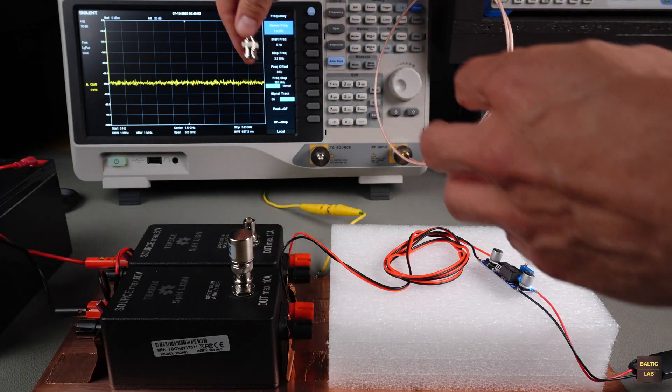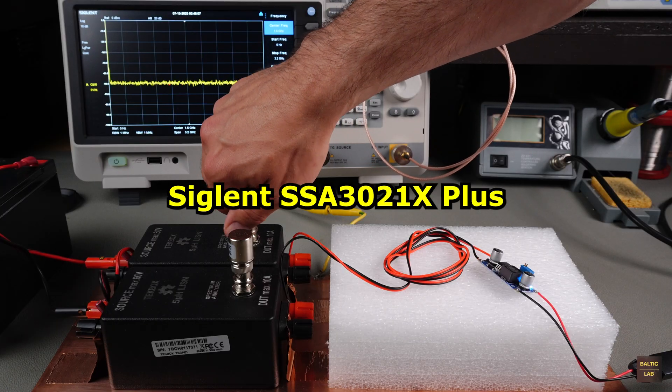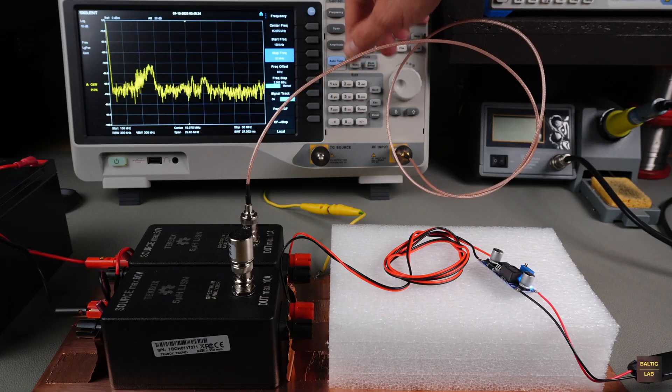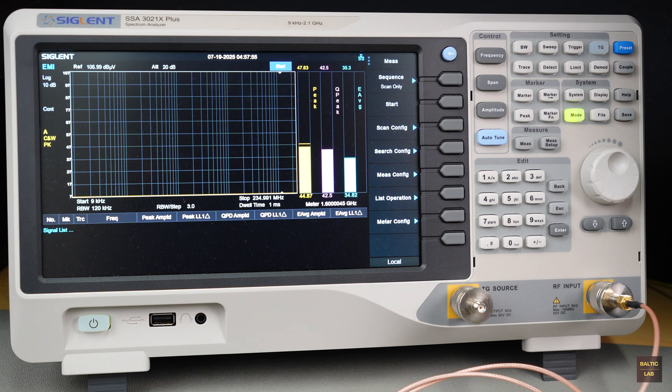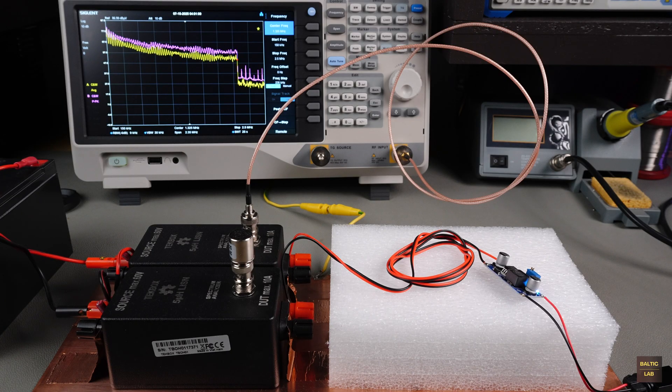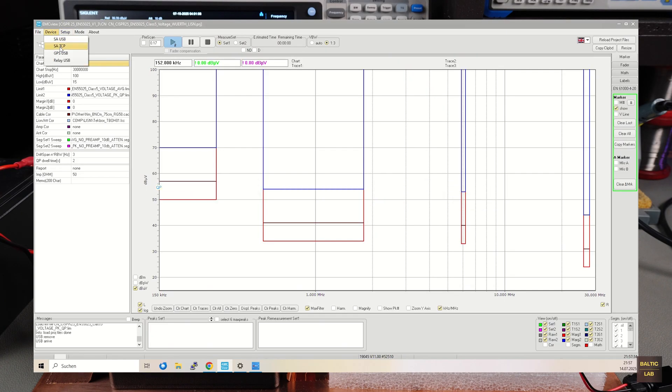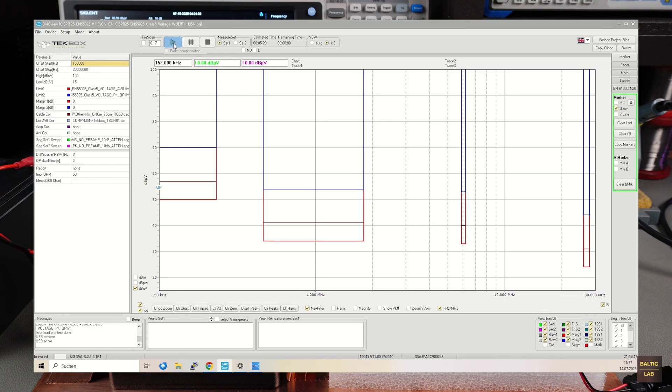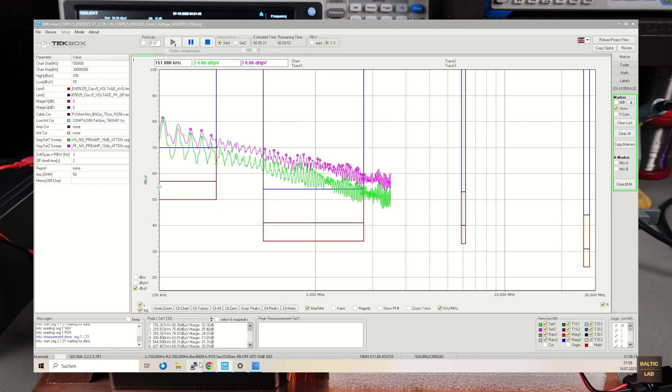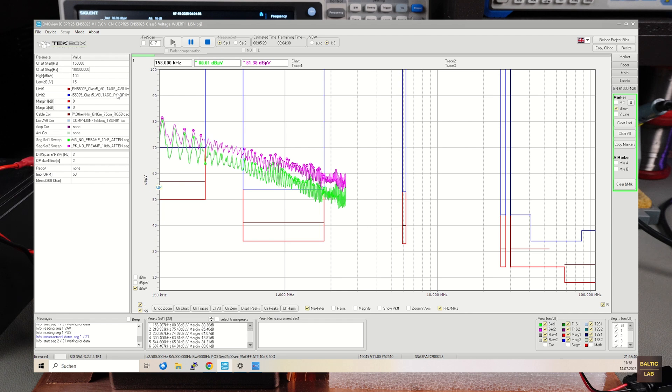The extracted interference signals are measured using a Siglent SSA3021X+, equipped with the EMI option. This option enables the standardized 9 kHz resolution bandwidth and quasi-peak detection using a special peak detector. To simplify the process, I use the EMC-View software from TechBox instead of manually configuring the CISPR25 limits in the spectrum analyzer. The software controls the measurement automatically, sets the correct resolution bandwidths, and accounts for frequency-dependent insertion losses from the LISENs and measurement cables. EMC-View is compatible with many common spectrum analyzers and can be used license-free, but only for measurements up to 10 MHz. The LISENs are also from TechBox, so the correction factors are already included in the software.